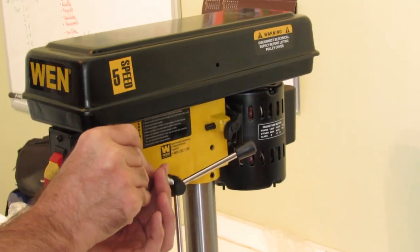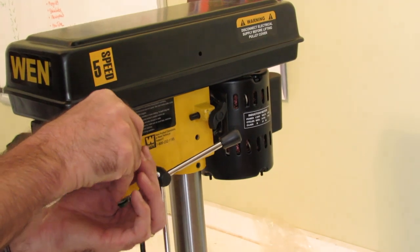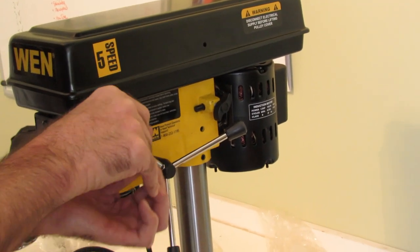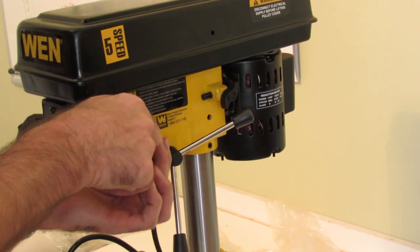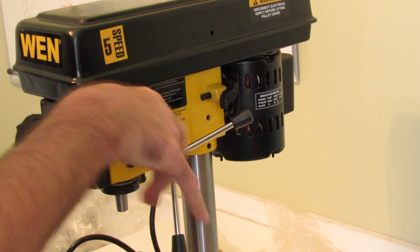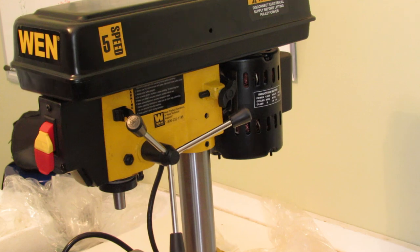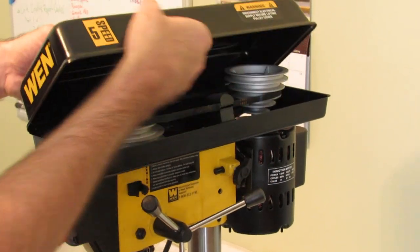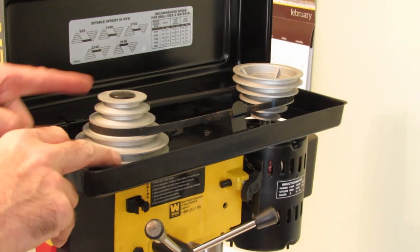You just hand tighten these. Don't go crazy with them. Because you want to be able to have that option to adjust them. Next, we're going to put the knob here to lift the cover off. And under here is where you'll be able to adjust your speeds.